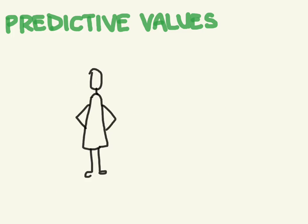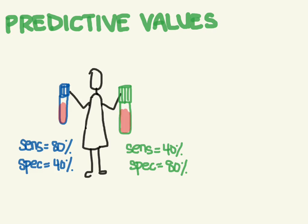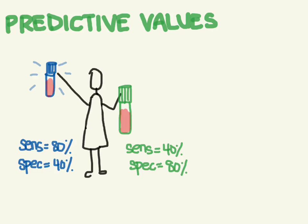Now let's talk about predictive values. In the last video we talked about sensitivity and specificity, which is good if you want to compare two tests. So let's say we got two blood tests — a blue one and a green one — and we decide which test to use. If we want to pick a test that will tell us with a good degree of certainty that a patient does not have a disease, you'd pick the one with greater sensitivity. Remember, a test with good sensitivity when it's negative helps you rule out a disease.